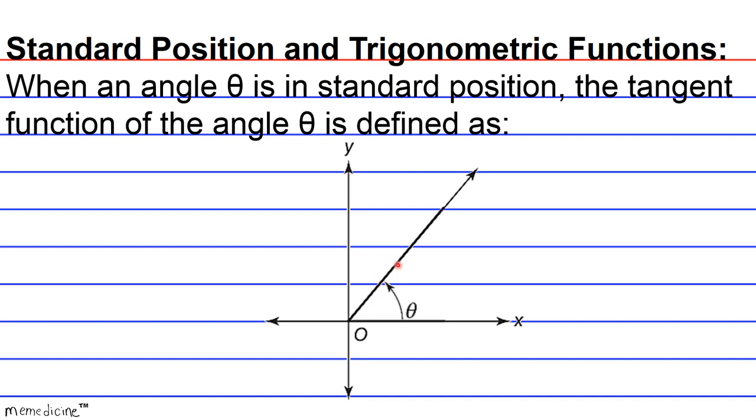And just in case you forgot, a quadrantal angle is an angle whose terminal side ends on either the x-axis or the y-axis, which is the case with both 0 degrees and 90 degrees. So this angle is acute, it's bound between 0 and 90 degrees. And this terminal side that terminates in quadrant 1, we're going to call this ray R for short. And let's choose a point P arbitrarily on this ray.